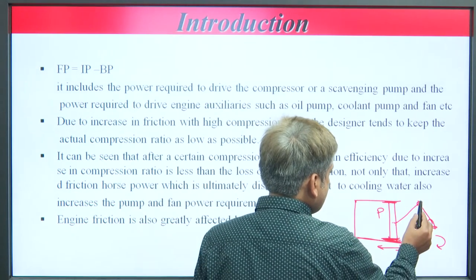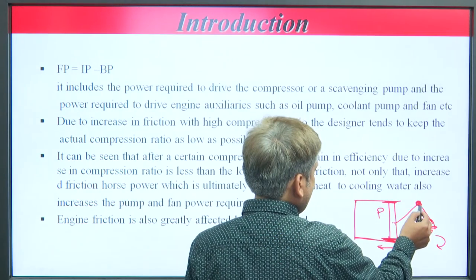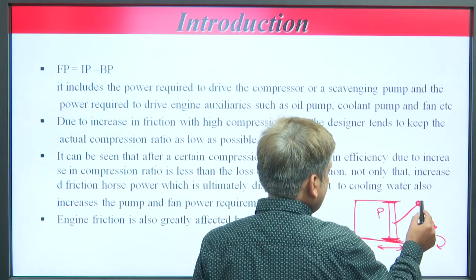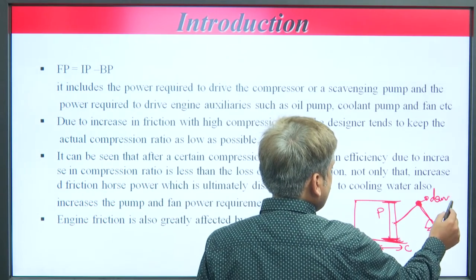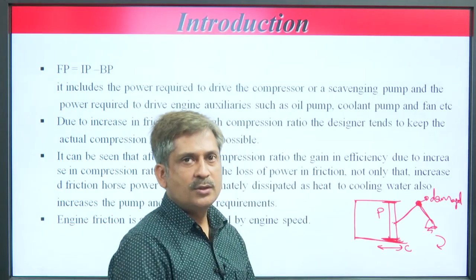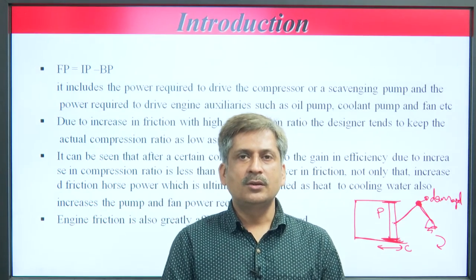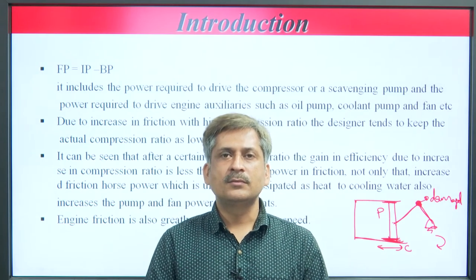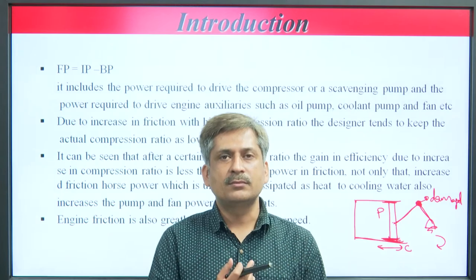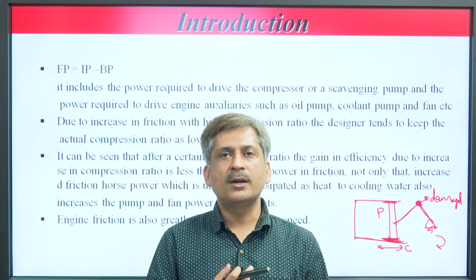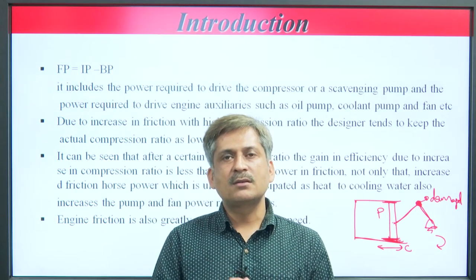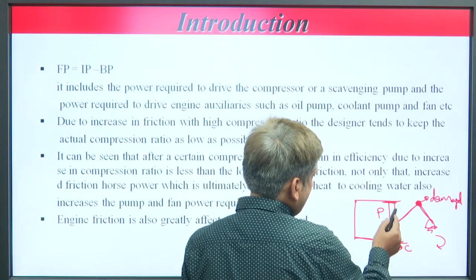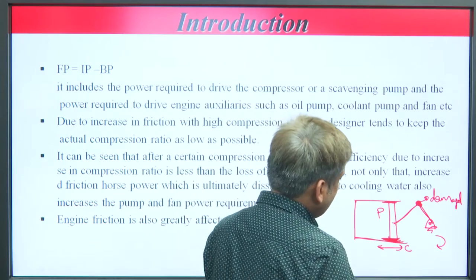There are also bearings and joints in the engine — joints connecting links. If there is no lubrication, there are mating surfaces that will be damaged after a few cycles. The power lost in friction is known as friction power. Indicated power is the actual power of the engine — the highest value — because you are burning fuel, converting chemical energy of the fuel into indicated power.